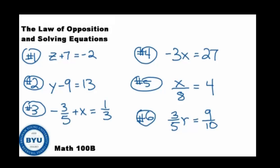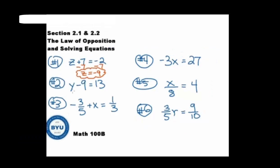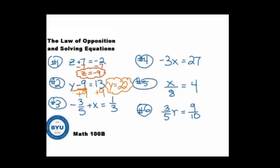How'd you do? We're just going to be doing opposite operations here. On the first one, we have z plus 7 equals negative 2. We're going to do the opposite of plus 7, which would be minus 7 to both sides. You should have got z equals negative 9 for that one. For question number 2, we use the law of opposites. We have y minus 9, and the opposite of subtraction is addition. So we add 9 to both sides, which gets us a final answer of y equals 22.